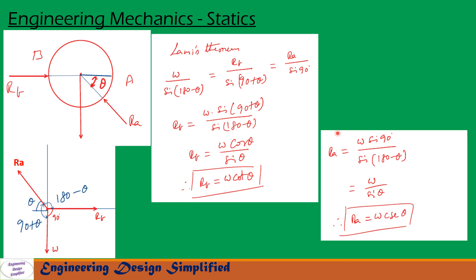Similarly, from the first and last terms, Ra equals W times sin 90 divided by sin(180 minus theta). Since sin 90 is 1 and sin(180 minus theta) equals sin theta, we get Ra equal to W divided by sin theta, which equals W cosecant theta. So the reaction of the inclined plane on the sphere, Ra, equals W cosecant theta.